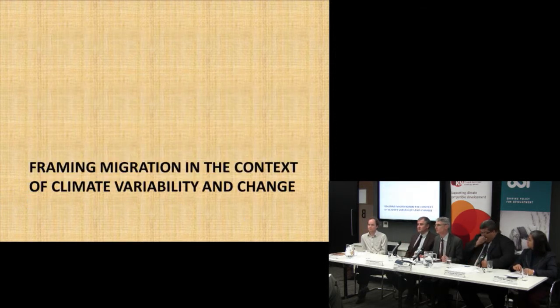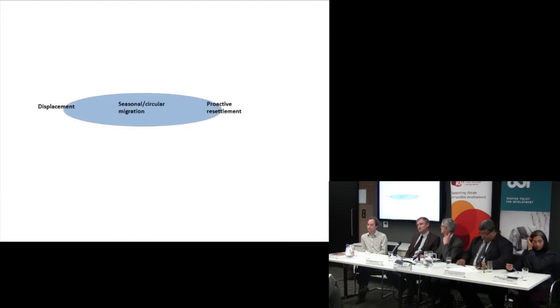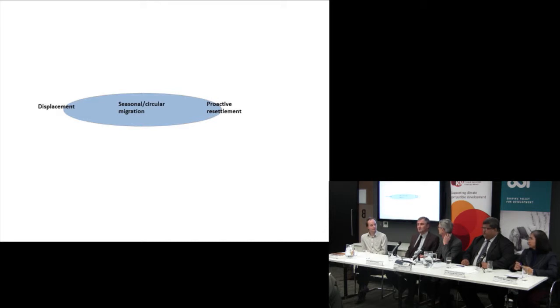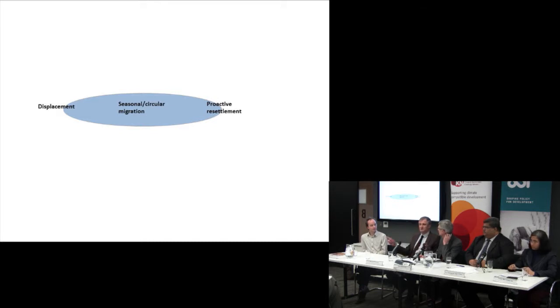The framing of migration is quite interesting. It's been called a continuum, but I prefer ellipse because I think it goes around in circles. On the far left is displacement — people forced to move, such as from the Boxing Day tsunami. On the far right, we have proactive resettlement, like communities in the Carteret Islands making a decision to resettle. And in the middle somewhere, we have seasonal circular migration. These are continuums with lots in between.